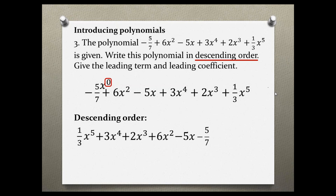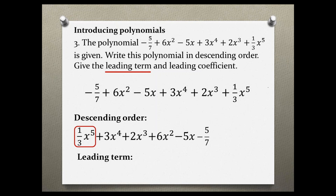As you can see, each individual term in our polynomial is going down from highest exponent to lowest exponent. Next, we are going to give the leading term. Once you rewrite your polynomial in descending order, the leading term is the first term. But if your polynomial is not in descending order, the leading term is the term with the highest degree. In our case, the leading term is 1 third x to the fifth power.